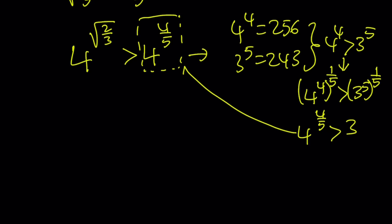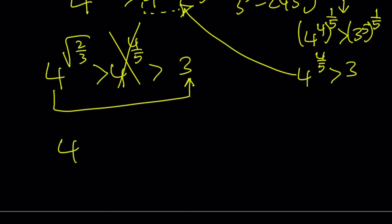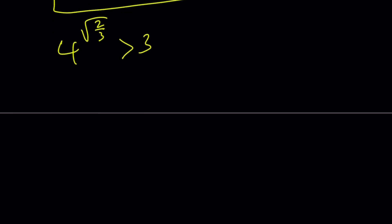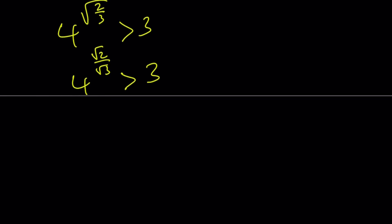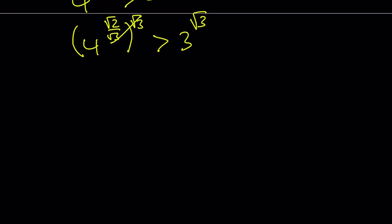So combining: 4 to the power square root of 2 thirds is greater than 4 to the power 4 fifths, which is greater than 3. Getting rid of the middle number, we have 4 to the power square root of 2 thirds is greater than 3. Writing this as 4 to the power square root of 2 over square root of 3 is greater than 3, and raising both sides to the power square root of 3, the square root of 3 cancels by the power of a power property, giving us 4 to the power square root of 2 is greater than 3 to the power square root of 3.